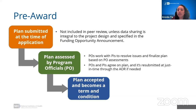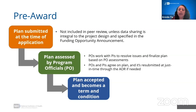Once applications move through peer review and are assigned to IC program officials, the program officials will work with institutions to resolve any issues and finalize the plan. The PO will assess whether the plan meets NIH's needs and complies with the policies. If revisions are needed, the PO will work with the institution to collect an updated plan, but resubmission is only required if things need to be updated or corrected. Once accepted, the plan becomes a term and condition of award.